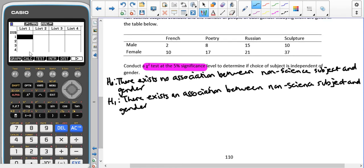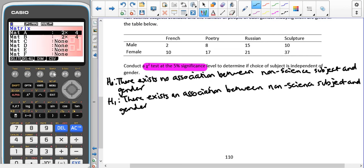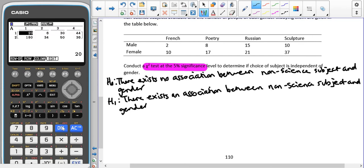As we have done before, we're going to put this into our calculator. So test, chi, two-way, click on the arrow mat, this is a 2 by 4. Delete anything if you've already got stuff in there. You can just type over the top and it will change it as well, so if I just start typing 2, 8, you can see the values being replaced, 15, 10, 10, 17, 21, and 37. Double check that you've put all those values in correctly.